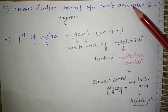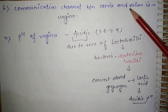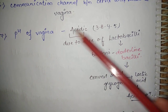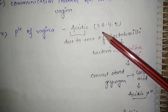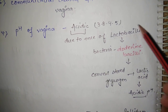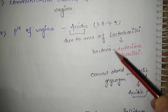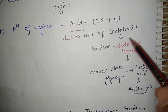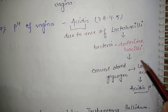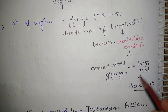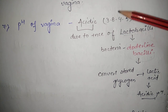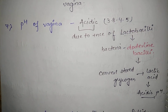The communication channel between the cervix and vulva — vulva being the external genital organ — is known as vagina. The pH of vagina is acidic, that is 3.8 to 4.5, due to the presence of lactobacilli, specifically the bacteria Doderlein's bacilli. This bacteria converts stored glycogen into lactic acid, making the vaginal pH acidic.